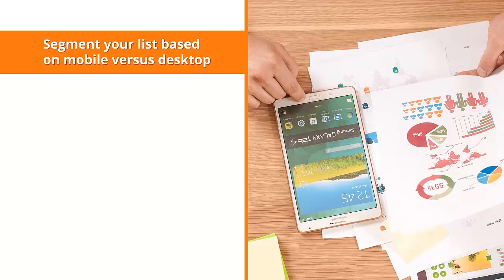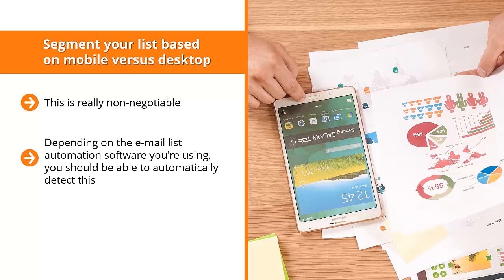Segment your list based on mobile versus desktop. This is really non-negotiable. Over 60% of internet users view the internet through a mobile device. The problem is that these devices have different screen sizes. Make sure your mailing list segments your list buyers based on their screen preference. Depending on the email list automation software you're using, you should be able to automatically detect this.